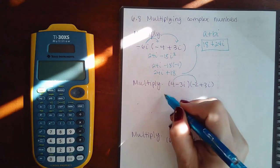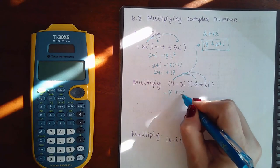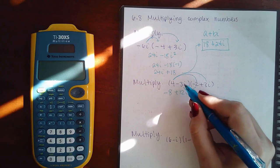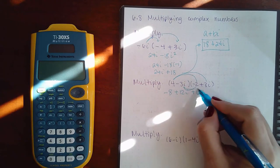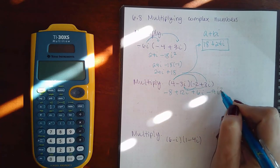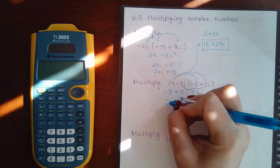So 4 times negative 2 is negative 8. 4 times 3i is 12i. Negative 3i times negative 2 is a positive 6i. And then negative 3i times a positive 3i is a negative 9i squared. Now the negative 8 will stay the same.